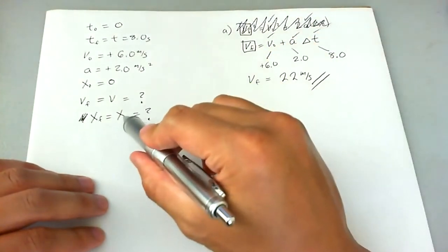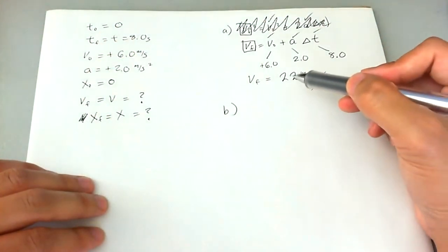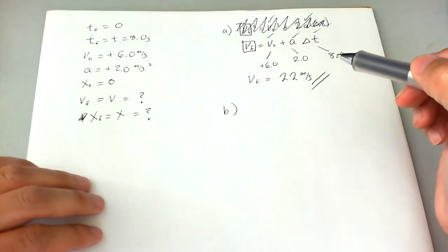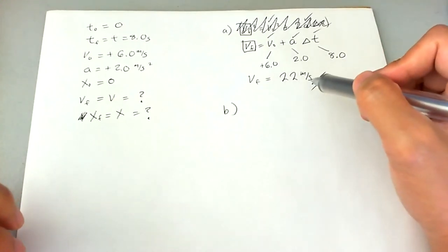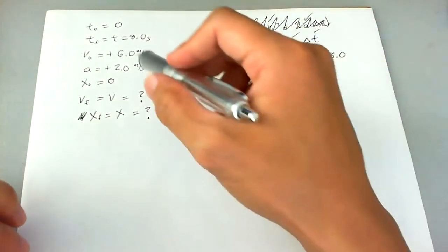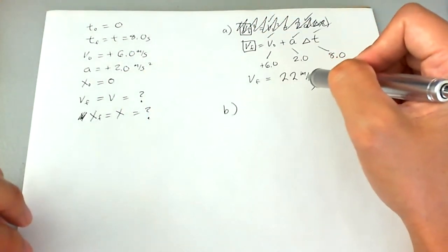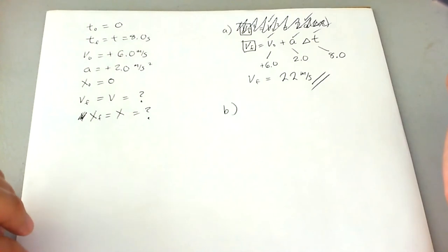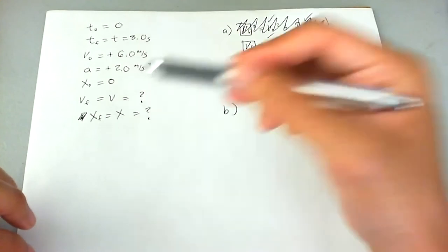For part b, we want to find the final displacement, and we know all this stuff, plus we also know this. Now, generally speaking, we don't want to use this as one of our knowns. We want to use what's already given, but if we can't use that, then we can just use this. It so happens that we don't need this final velocity to find out part b, which is finding the displacement.